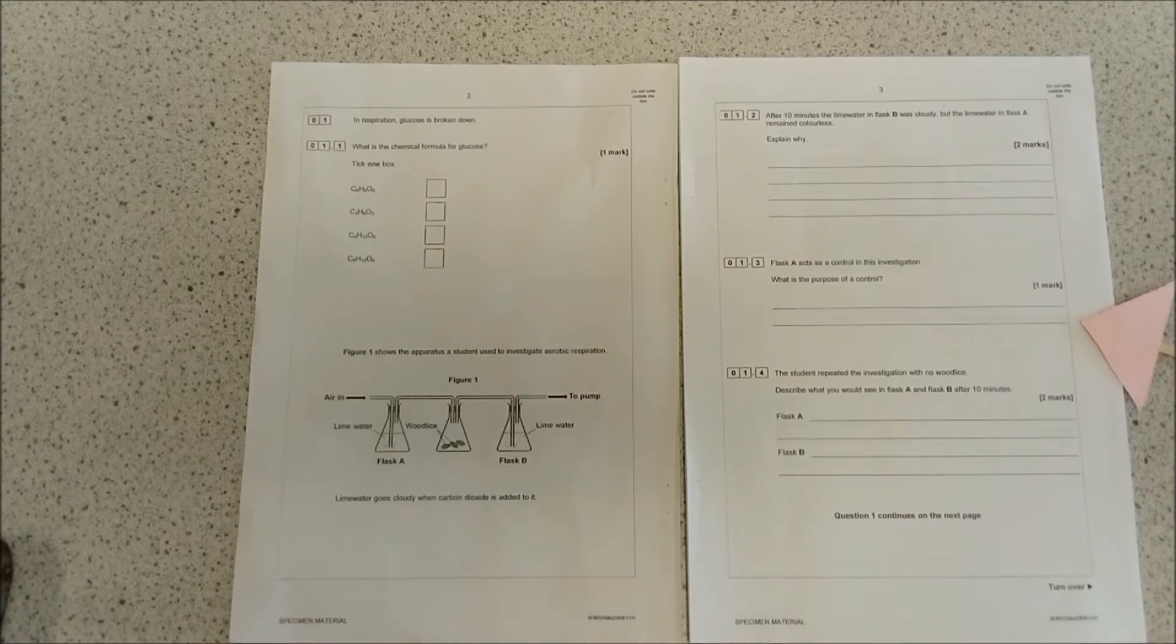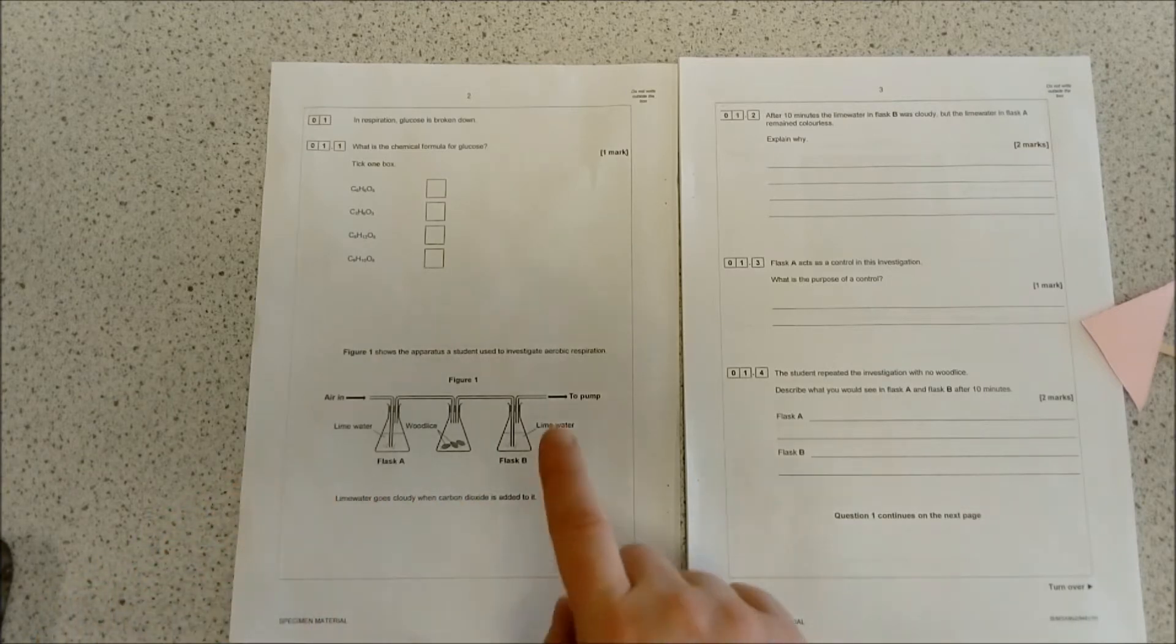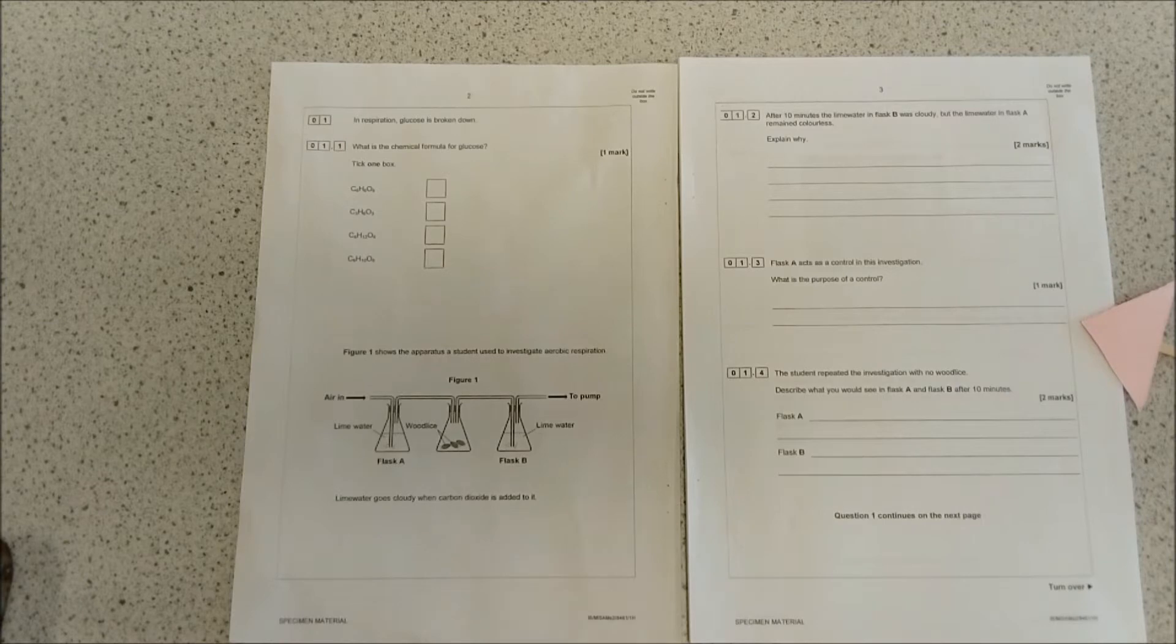If the lime water in flask A had turned a milky white color, then it wouldn't matter what the wood lice were doing. The fact that in flask B it's a different color to flask A means that it's acting as a control, proving that it's the wood lice that are carrying out the respiration and therefore increasing the amount of carbon dioxide.